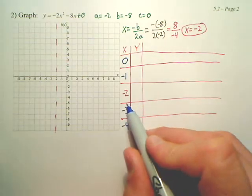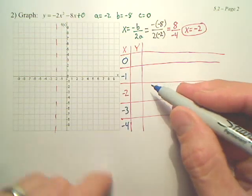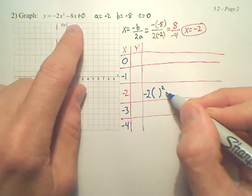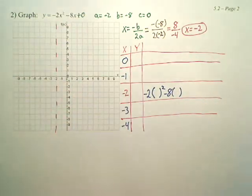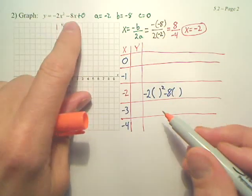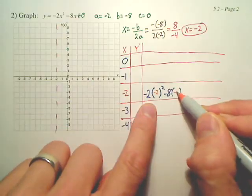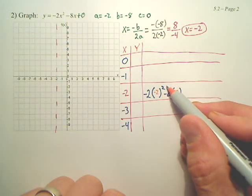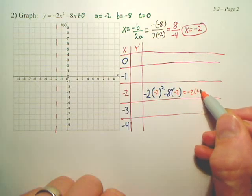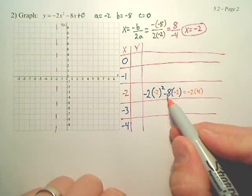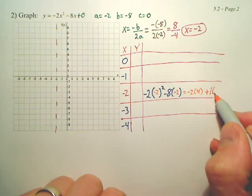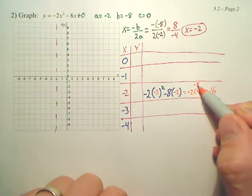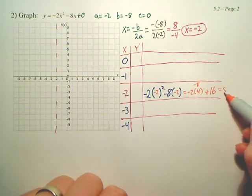Now the first value we need to plug in is the middle one. The equation is negative 2x squared minus 8 times x. You're going to plug in negative 2 for x. Whatever you get is going to go right there for y. So negative 2 squared is 4. Leave the negative 2. And negative 8 times negative 2 is positive 16. This is negative 8. So what's negative 8 plus 16? 8.